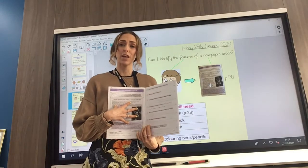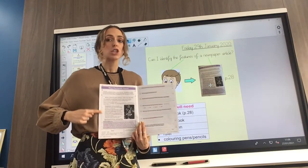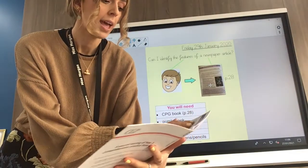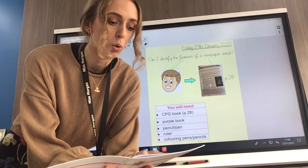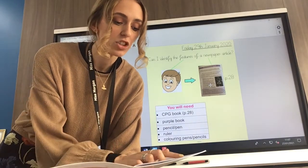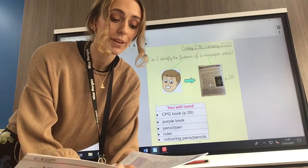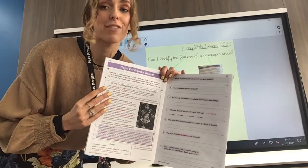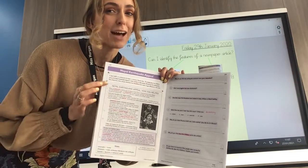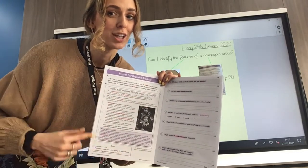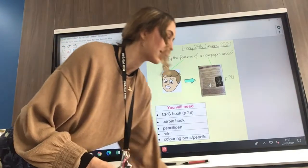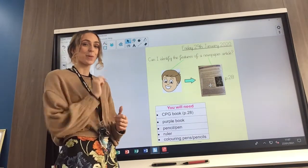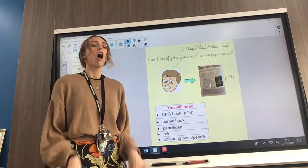Before we go any further, I need you to read today's text. I'll read the top part for you: In April 2015, an earthquake hit Nepal, a country in South Asia. The charity Save the Children set up the Nepal Appeal to raise money to help people affected by the earthquake. This article from their website describes how donations have made a huge difference to the area. Now read the newspaper article and have a look at its features — what's so special about it? Hit pause on the video and do that for me.